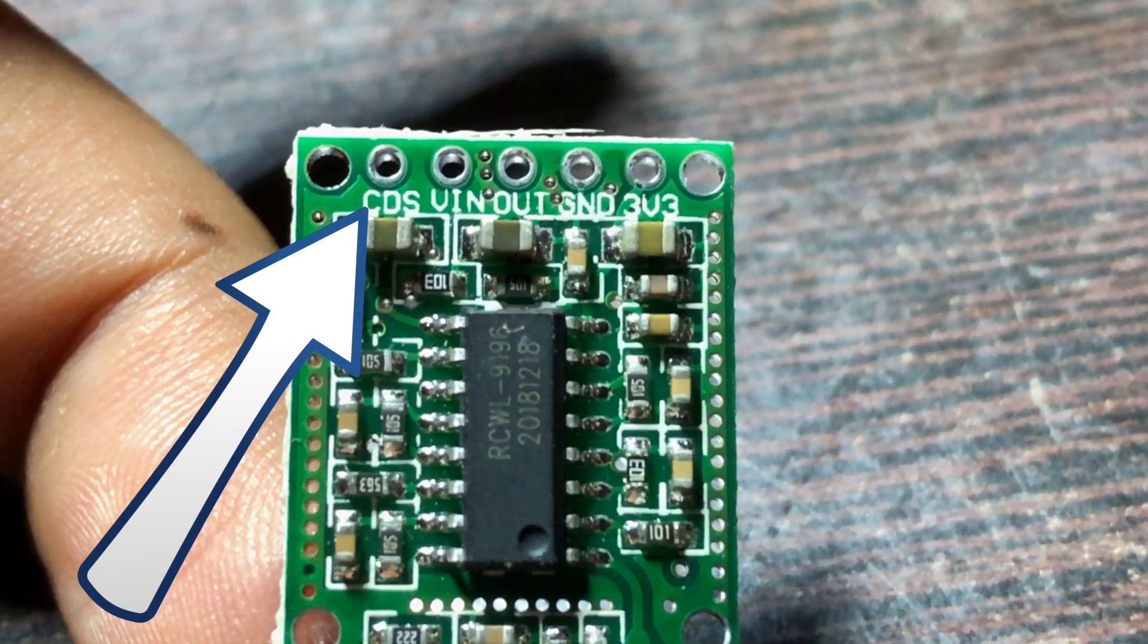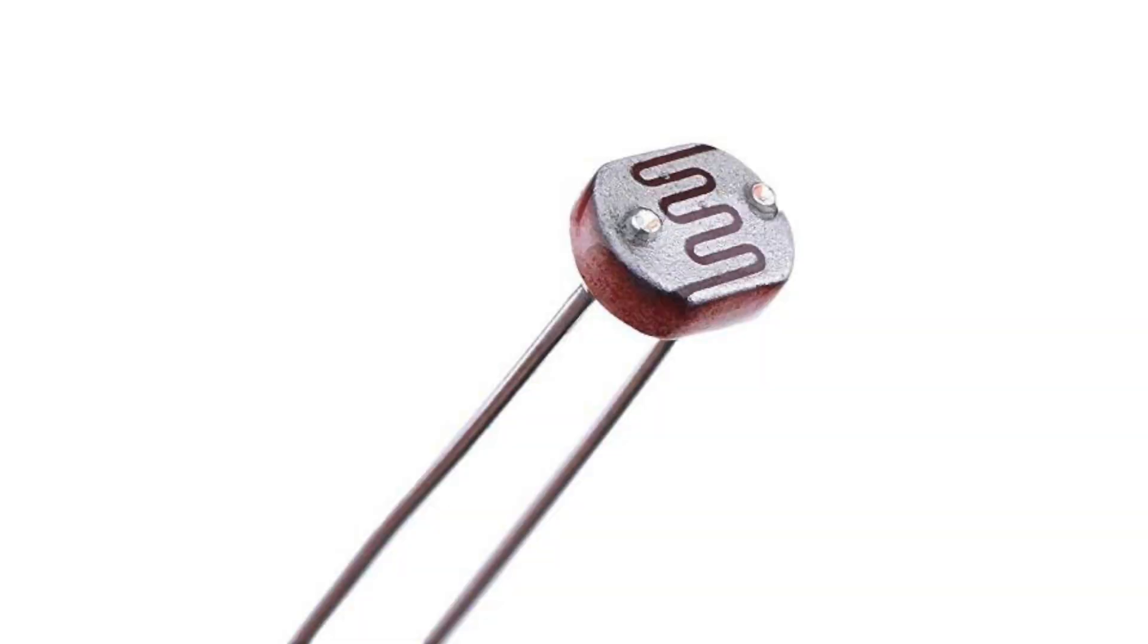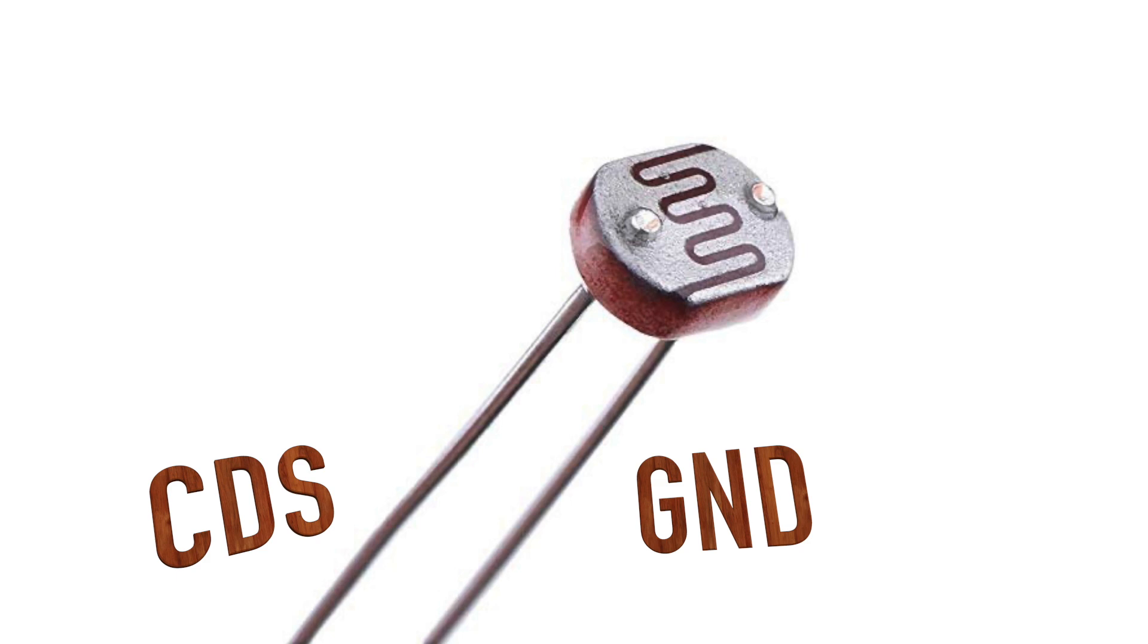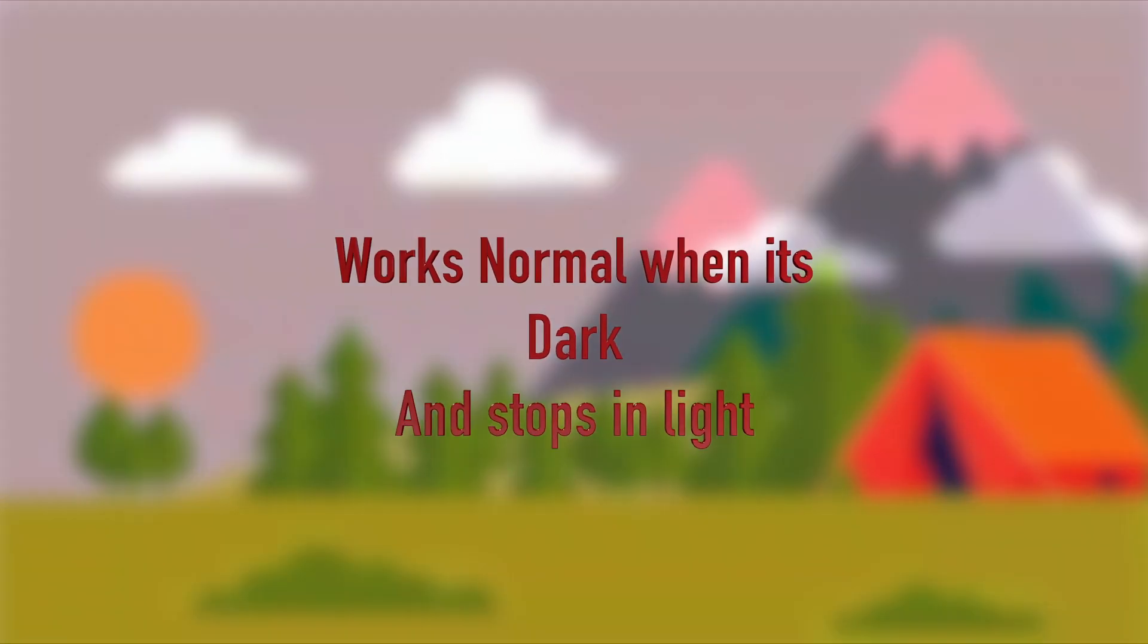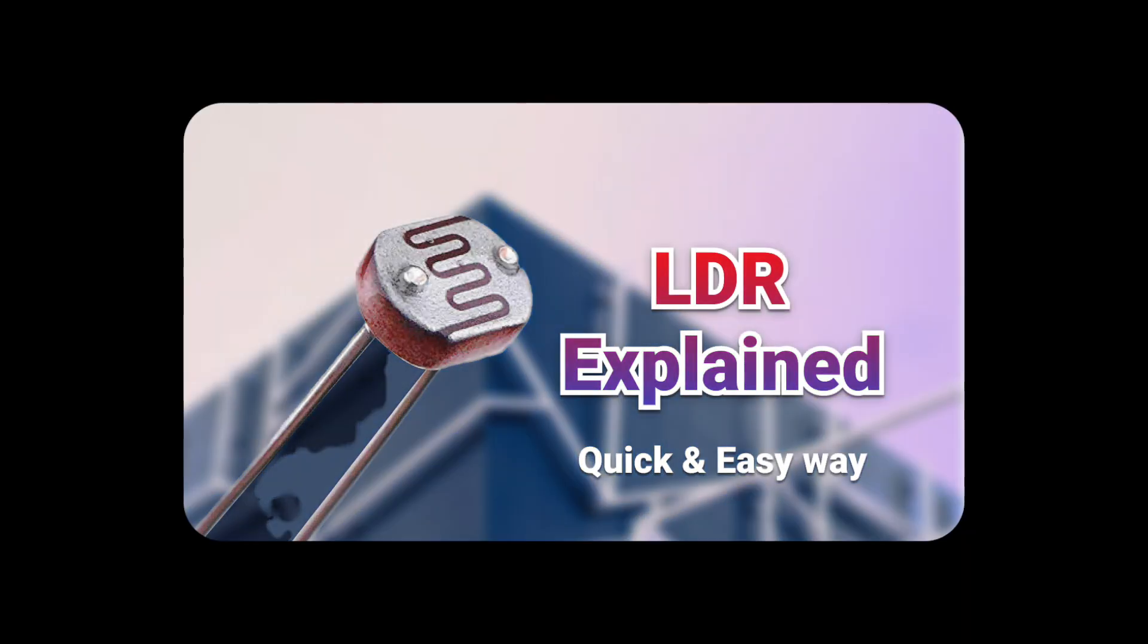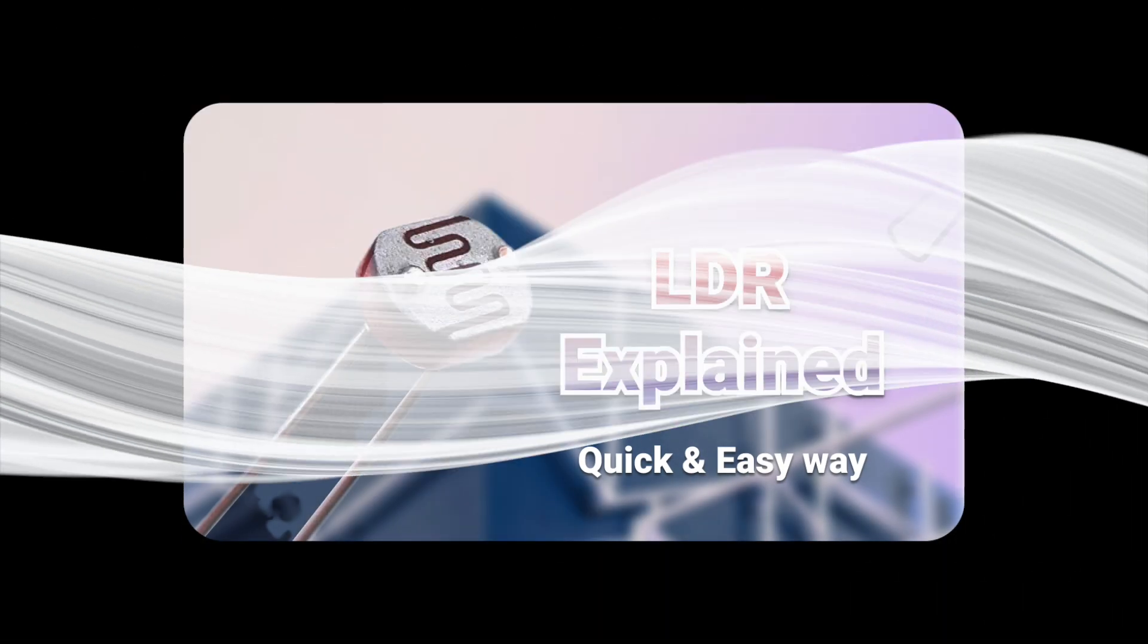Lastly is the CDS pin, which is an LDR pin where you can connect an LDR to this pin and ground. With this, you can get this sensor to work only in nights, or in other words, this will only work when the LDR has no light supply. Now if you still don't understand what an LDR is, click on the i button above and watch the video for that.